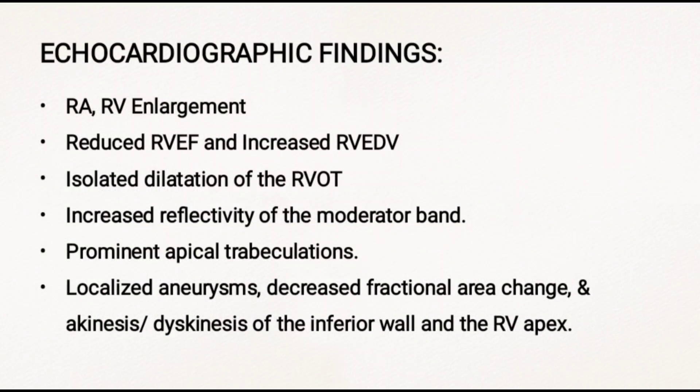Echocardiography is the primary diagnostic test which plays an important role in the initial diagnosis of ARVD. The echo findings in ARVD include: RV enlargement, reduced RVEF, increased RV EDV, isolated dilatation of the RVOT, increased reflectivity of the moderator band, prominent apical trabeculations, localized aneurysms, decreased fractional area change, and akinesis or dyskinesis of the inferior wall and RV apex.